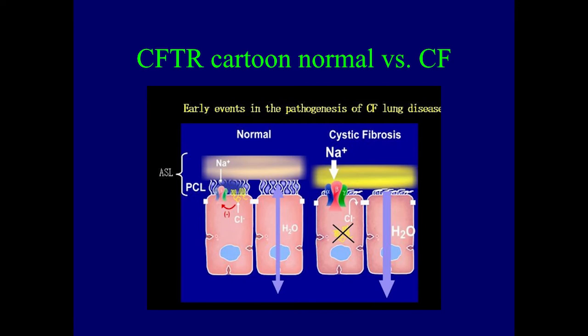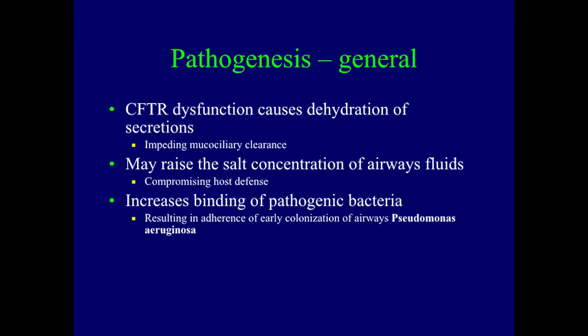The CFTR dysfunction causes dehydration of your secretions, and that impedes mucociliary clearance. Those little wavy lines above the cells represent cilia — small microscopic hair-like structures that normally beat regularly like brooms cleaning your airways. If they're not working well, you're not going to clear the mucus, and that mucus traps everything you breathe — cat hair, smoke particles from fires, or bacteria like Pseudomonas. The CFTR dysfunction also changes the salt concentration in airway fluids, which changes host defenses and allows increased binding of pathogenic bacteria, leading to adherence and early colonization of the airways with Pseudomonas aeruginosa.